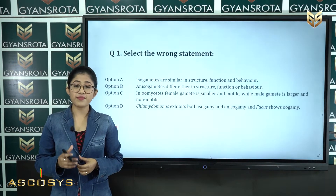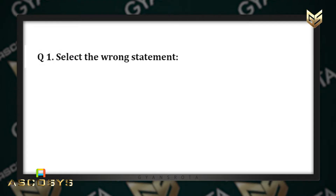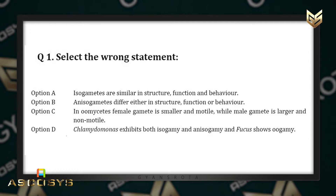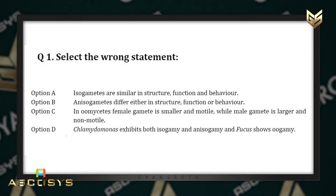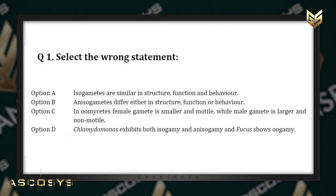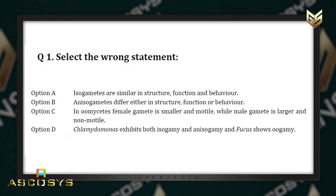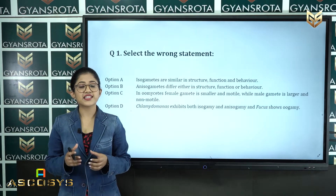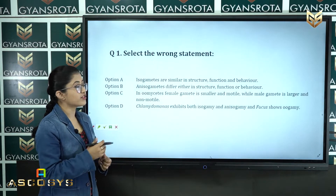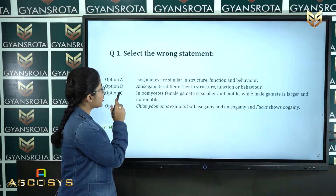Hello students, in today's session I will be solving the NEET question paper of the year 2013. Let's start with the first question: select the wrong statement. Option A: isogametes are similar in structure, function and behavior. Option B: anisogametes differ either in structure, function or behavior. Option C: in oomycetes, the female gamete is smaller and motile while male gamete is larger and non-motile. Option D: Chlamydomonas exhibits both isogamy and anisogamy, and Fucus shows oogamy. We have to select the wrong statement, so let's find out.